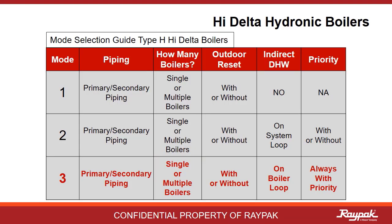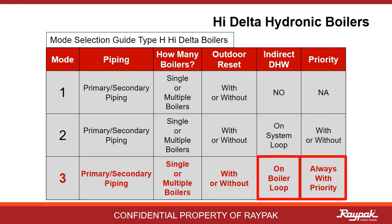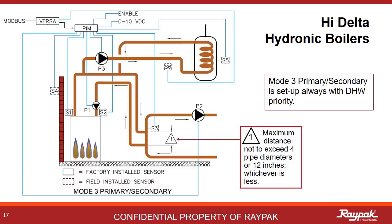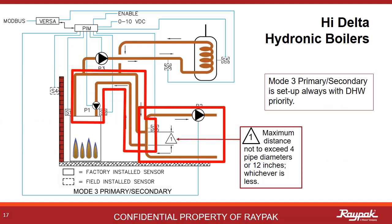Now moving on to the Mode 3 discussion. In Mode 3, the indirect domestic hot water is on the boiler loop. Mode 3 systems are always run with priority. This is a Mode 3 primary-secondary single boiler system. You have a boiler loop and a system loop, and the indirect domestic hot water heat exchanger is on the boiler loop in this case.